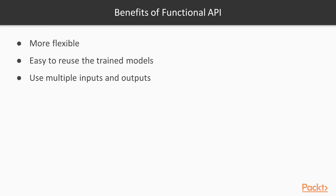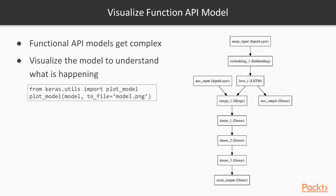Some of the key benefits of using the functional API are that it's more flexible, it's easy to reuse models and layers, and it also allows you to use multiple inputs and multiple outputs for bigger, more complex problems. In order to visualize models within the functional API, you can use the plot_model function. As models get more complex, it's often harder to understand the model architecture. Using plot_model allows you to visualize the layers and how they're interacting.